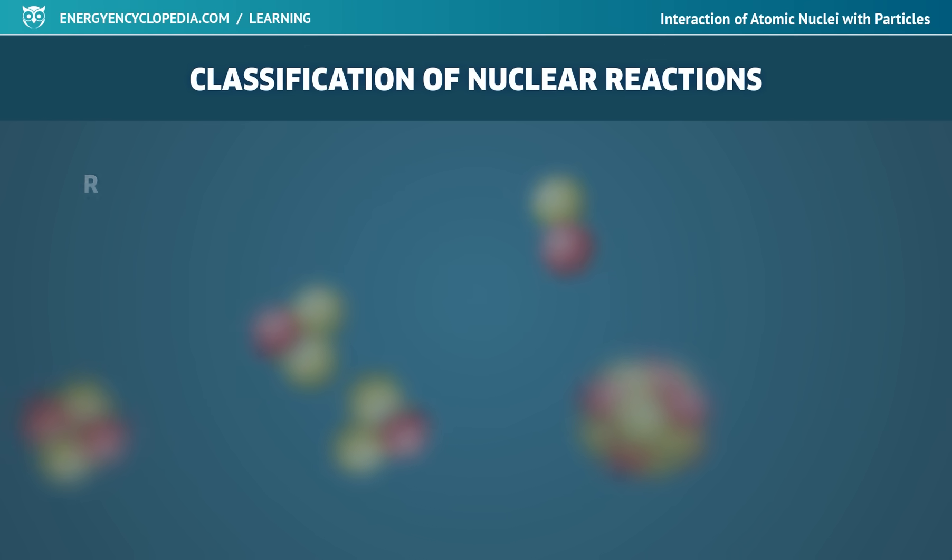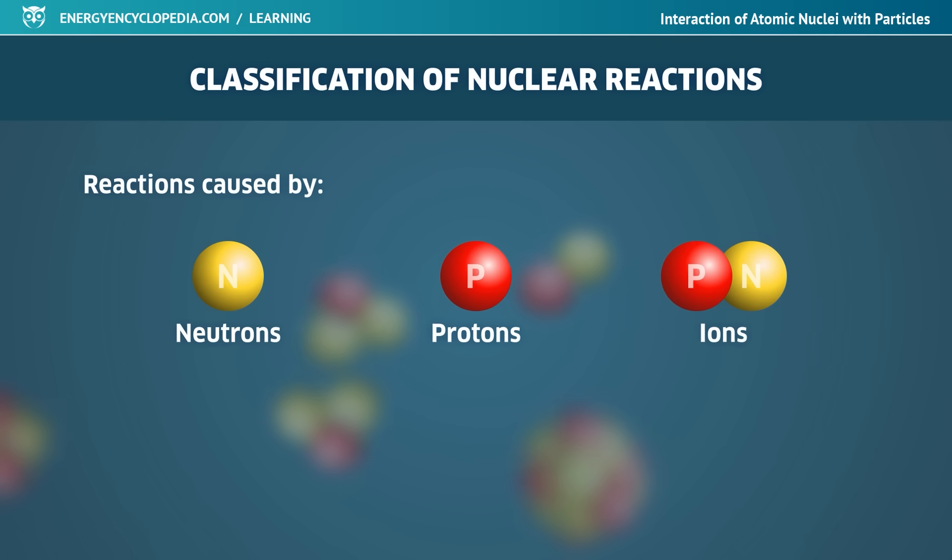The most common division of nuclear reactions is the classification according to which particle they were triggered by. The cause of the reaction can be neutrons, protons, and other heavier positively charged ions. Reactions caused by electrons or gamma radiation are less common.